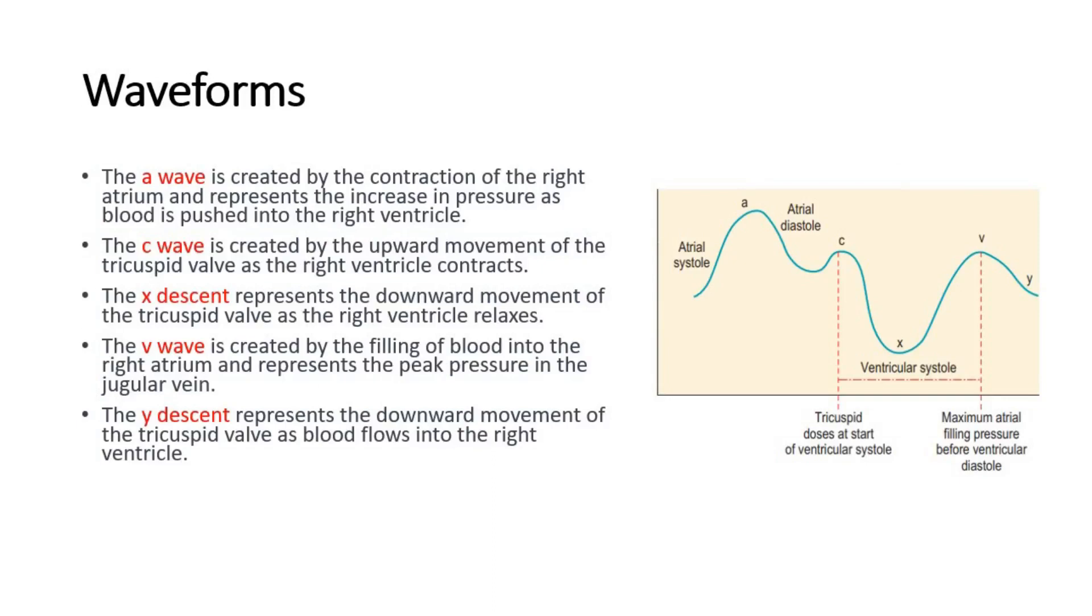This picture here shows the five waveforms seen in JVP. The A wave is created by the contraction of the right atrium and represents the increase in pressure as blood is pushed into the right ventricle.